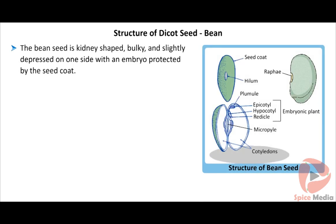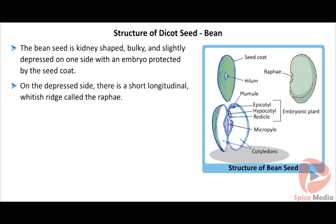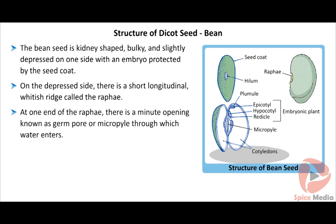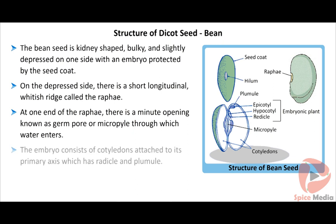The bean seed is kidney-shaped, bulky, and slightly depressed on one side, with the embryo protected by the seed coat. On the depressed side there is a short longitudinal whitish ridge called the raphe. At one end of the raphe there is a minute opening known as the germ pore or micropyle through which water enters.